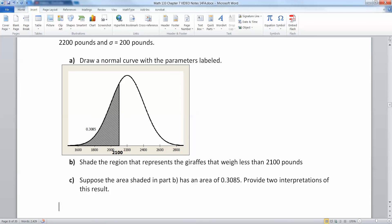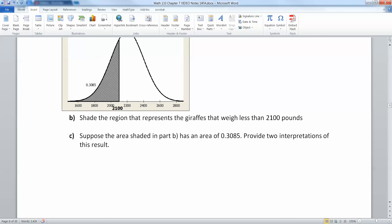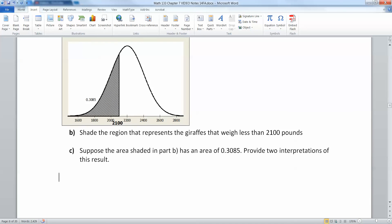Suppose for some reason that I know that the area that I shaded is 0.3085. Obviously we don't know how to do that yet, but that's what section 7.2 will be all about. We'll figure that out later. But for right now we know that this area is 0.3085. There's two ways to interpret that.